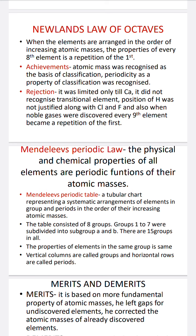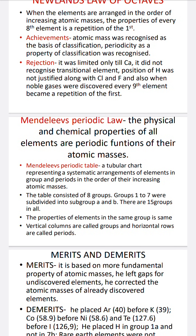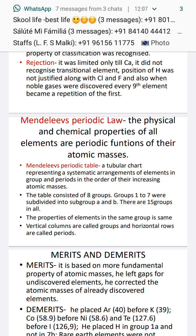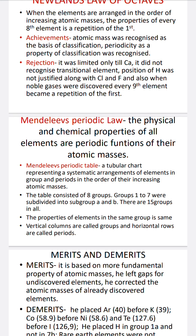Then came Mendeleev, who actually gave the basis of the modern periodic table. Mendeleev's periodic law states that the physical and chemical properties of all elements are periodic functions of their atomic masses. Mendeleev's periodic table is defined as a tabular chart representing a systematic arrangement of elements in groups and periods in the order of increasing atomic masses.